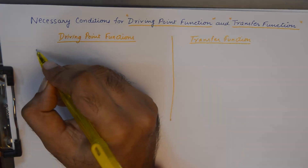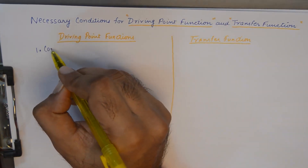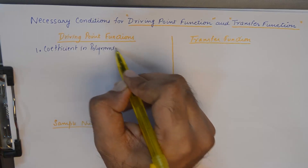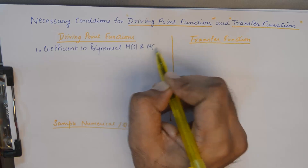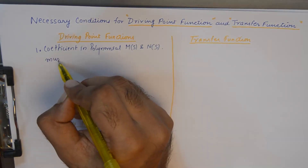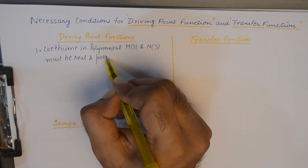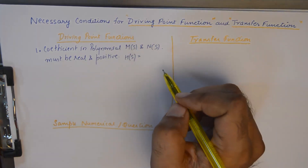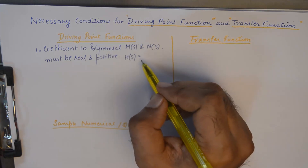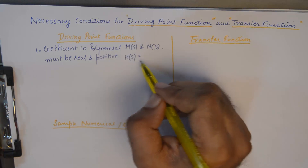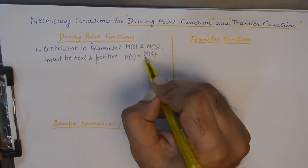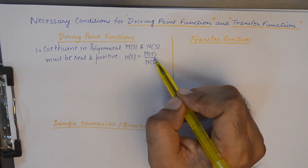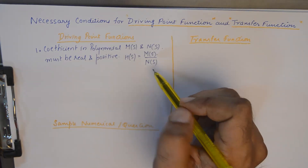For driving point functions, the first necessary condition is that the coefficients in polynomials M(s) and N(s) must be real and positive. The function H(s) is composed of a numerator term M(s) and a denominator term N(s), and both of these polynomials must have real and positive coefficients.